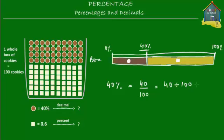If you simplify and calculate 40 divided by 100, you get 0.40 — and omitting the trailing zero, that's 0.4. So 40% is nothing but 0.4 in decimal.